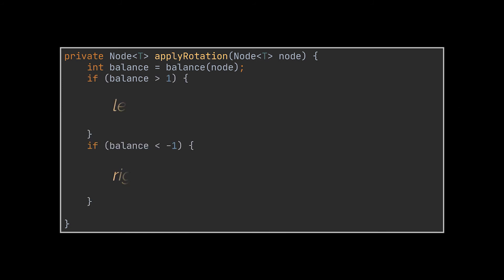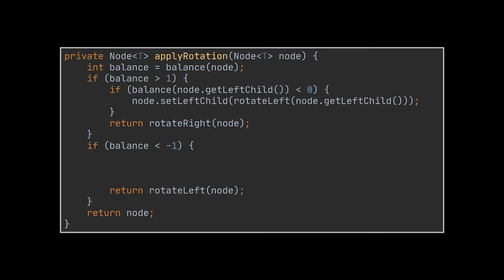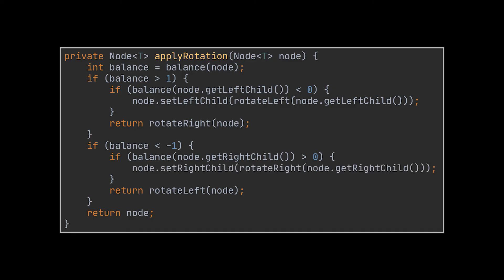In applyRotation, if the balance is greater than 1 we are in a left-heavy situation and apply a right rotation; if smaller than minus 1, a right-heavy situation calls for a left rotation. For the left-right case, when the node's balance is positive but the left child's balance is negative, we perform a left rotation on the left child followed by a right rotation on the node. For the right-left case, when the node's balance is negative but the right child's is positive, we do a right rotation on the right child followed by a left rotation on the node.